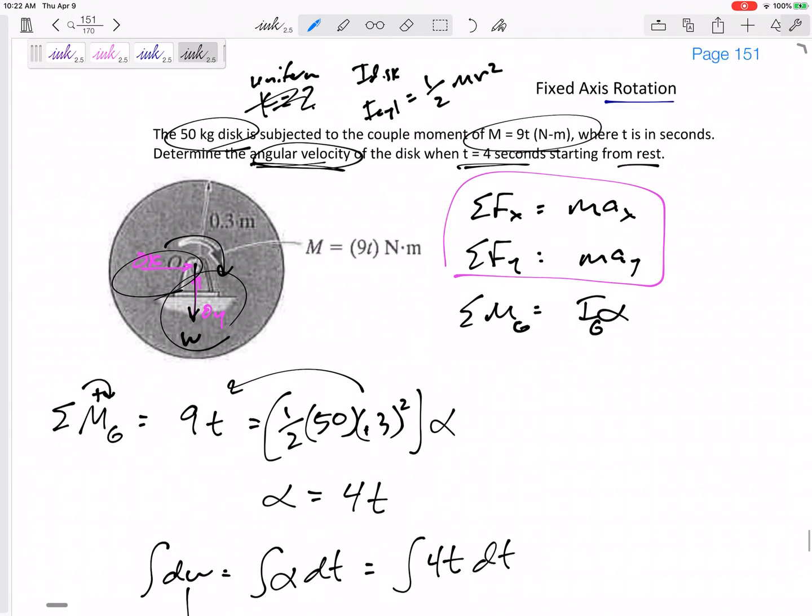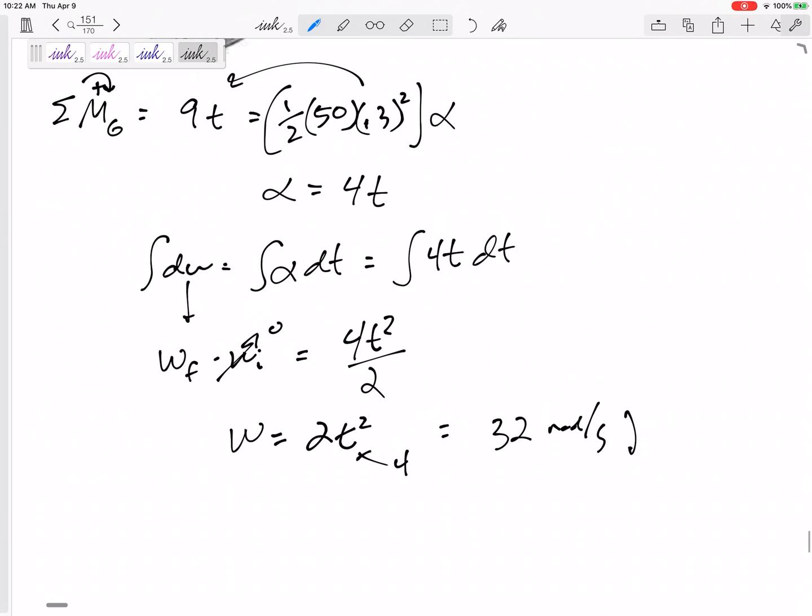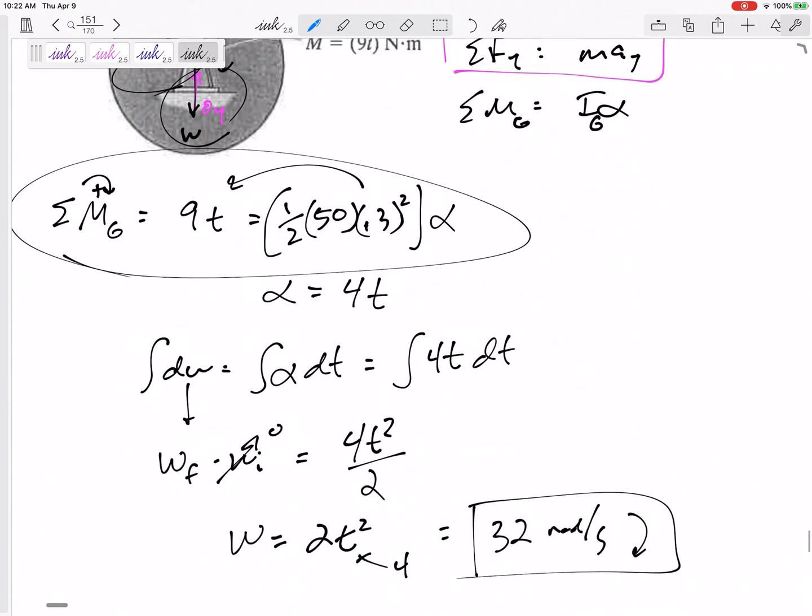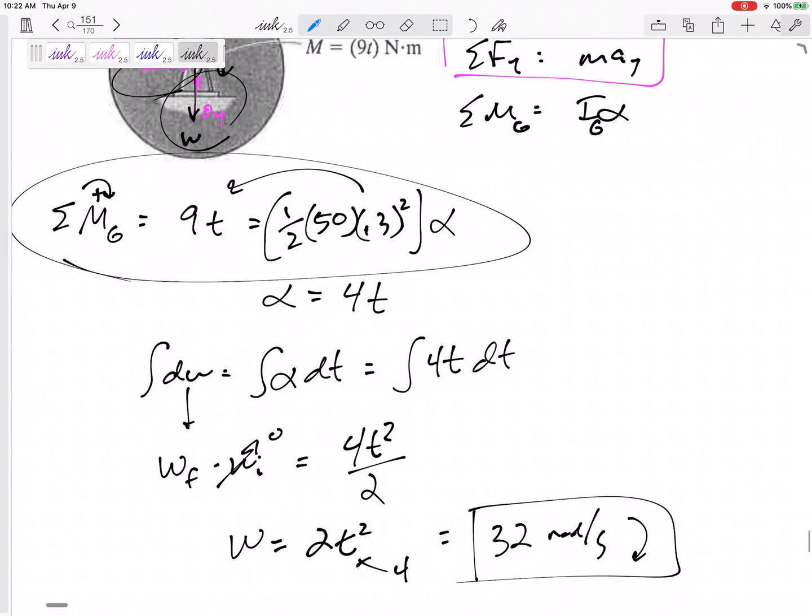Sometimes this moment equation just gives us an equation for alpha, and then we can use that alpha to find velocities or find any other things that we want to find.